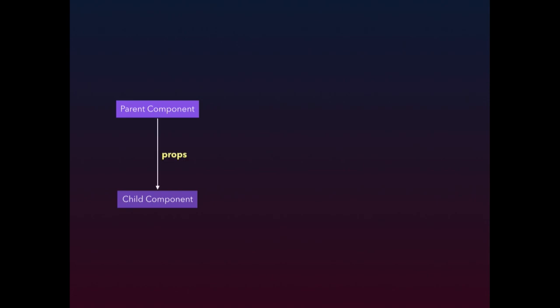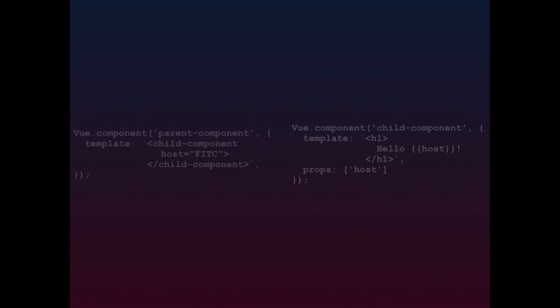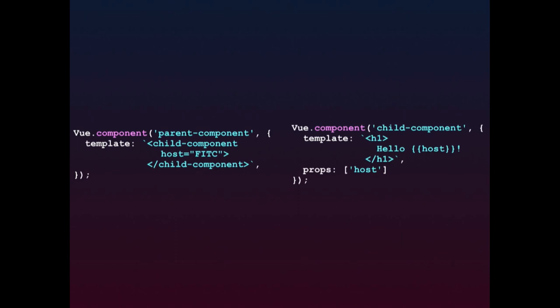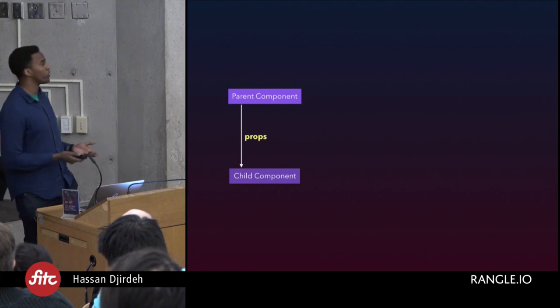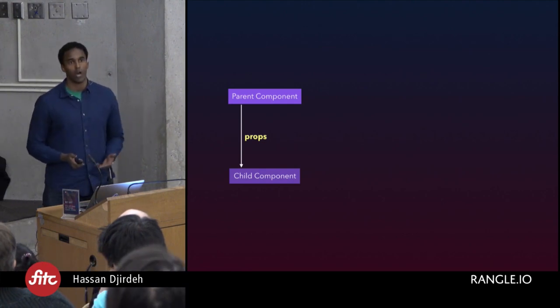This is a fairly broad topic, so we'll start very basic. In this hypothetical app, we have a parent component and a child component. To pass data from the parent down to the child, Vue gives us the ability to use props. On the left-hand side, a ParentComponent renders a ChildComponent, providing a prop labeled 'host' with the string value 'FITC'. The ChildComponent declares the prop and uses mustache syntax to bind that value onto a template, displaying 'Hello, FITC'. Regardless of how big your Vue app gets, using props to pass data downwards remains the same.